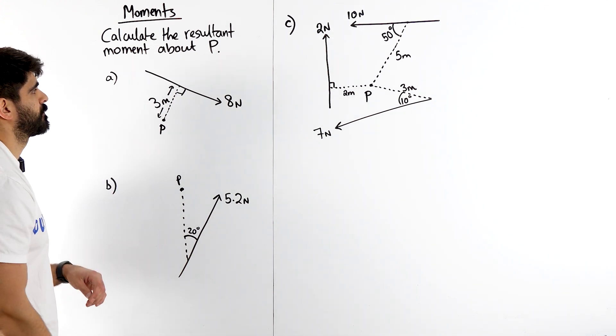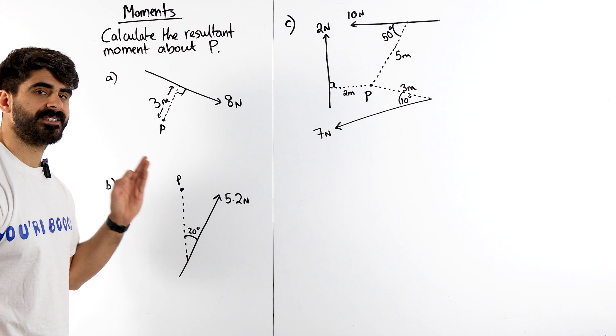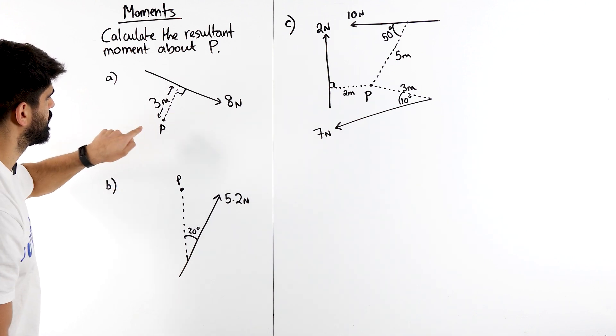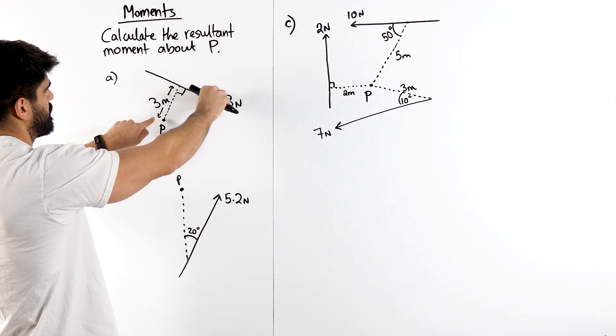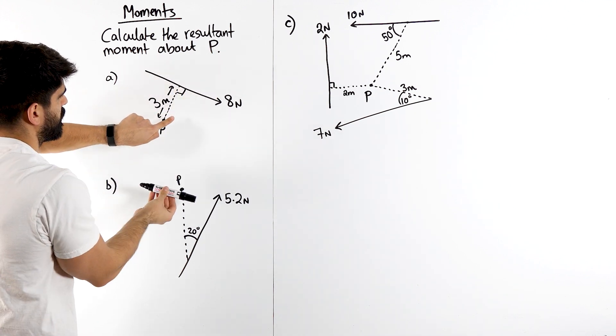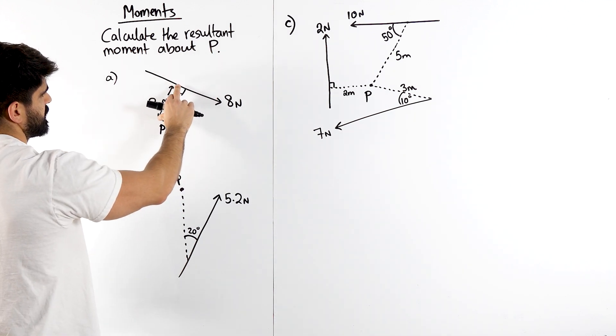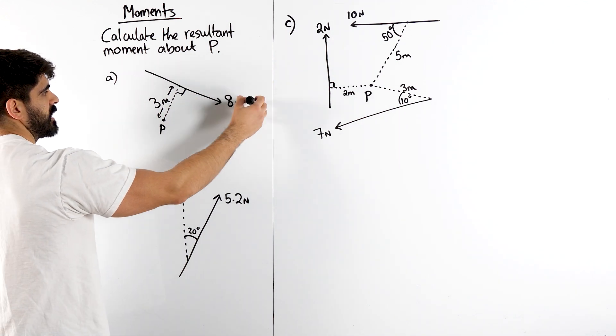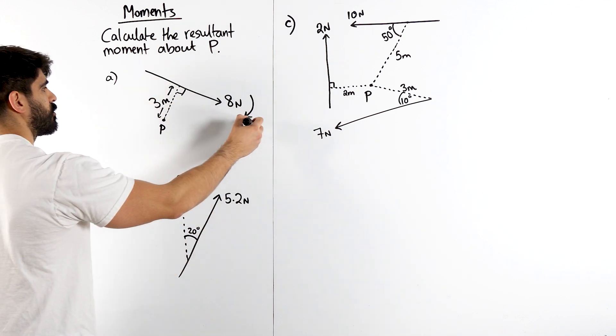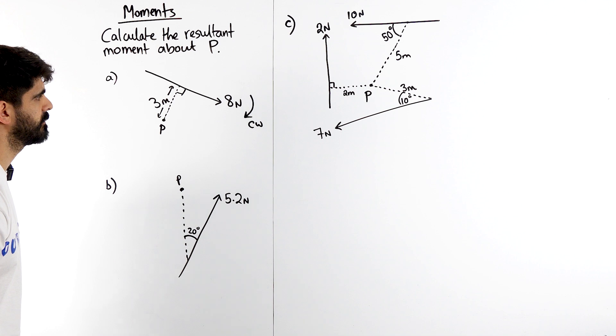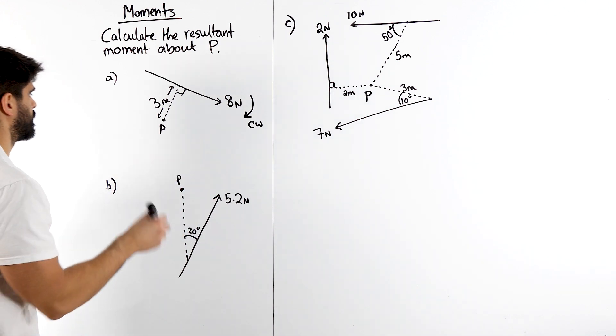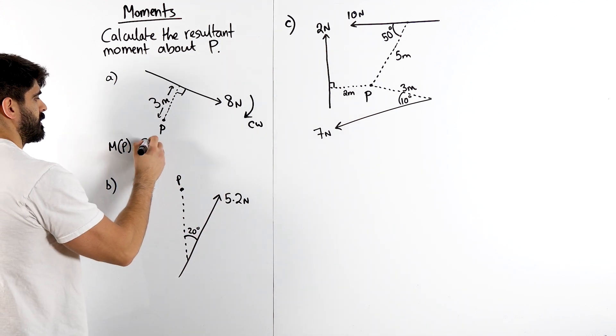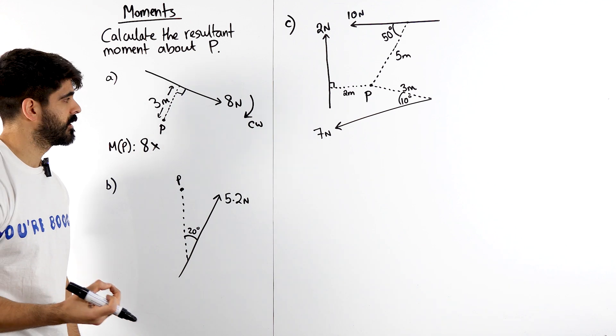So if we look at part a, we need to make sure we see the perpendicular distance from where we are taking moments from. So imagine I have a sheet of paper here, and I'm putting my finger on p, and I'm pushing the paper this way. The paper is going to spin this way around. We're following this trajectory, and that distance there is maintaining the whole time. So the moment here, we're going to say for each force, whether it's clockwise or anti-clockwise. Now, this one is clearly a clockwise moment. So this is only going to be a clockwise moment. So our moment about p is going to be the force, which is 8.